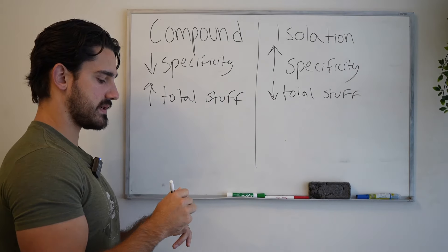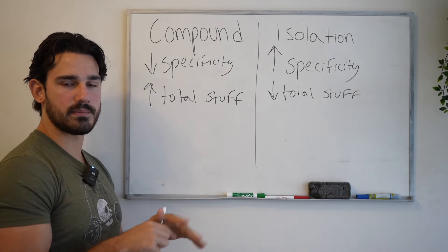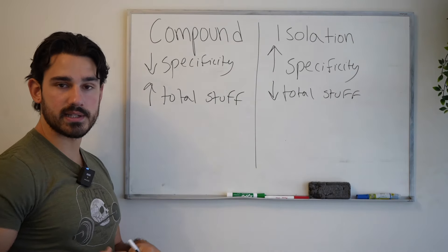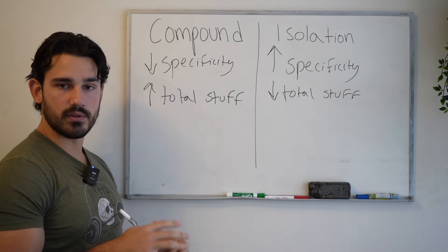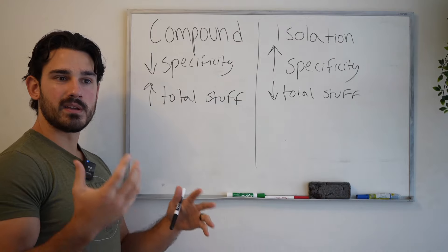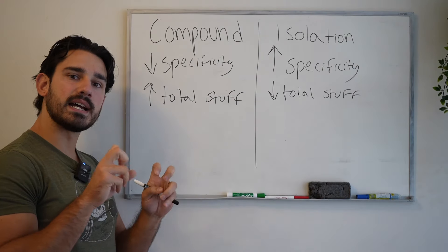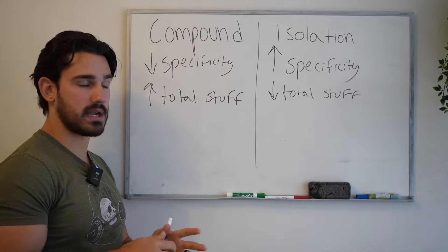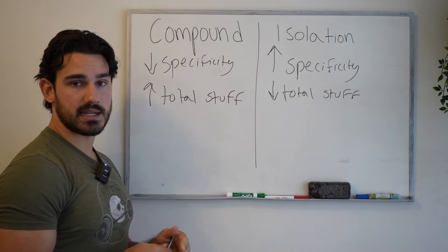So again, bench press versus triceps extension. In the context of a bench press, we have our chest muscles, we have our front delts, we have our coracobrachialis, we have our triceps, all those different heads. And so with something that is inherently more compound, we get more total things done. But each of those things in isolation is doing less total work on a set to set basis than something that is more isolation.